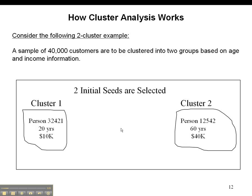Let's just pretend like we have 40,000 individuals that we're trying to cluster into two groups based solely on age and income information. Remember, as we spoke in class, the process, whether it be SAS or SPSS, has to start somewhere by randomly selecting two individuals to start out those two groups or two clusters or two segments. So in this case it shows somebody who's 20 years old, $10,000 income, and somebody who's 60 years old with a $40,000 income.